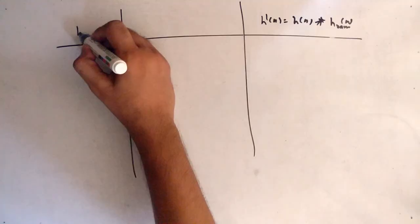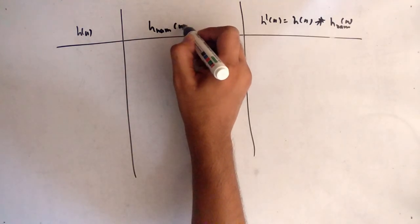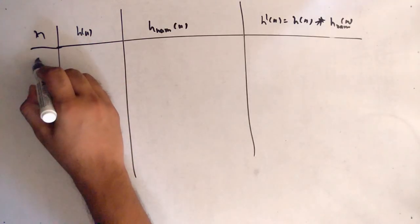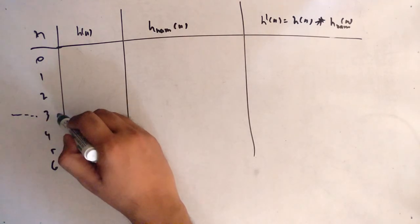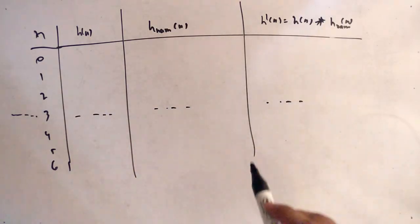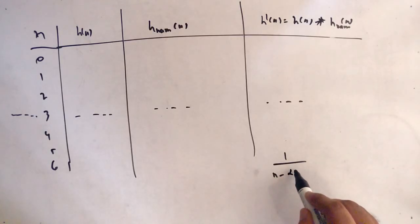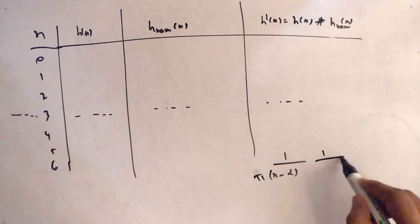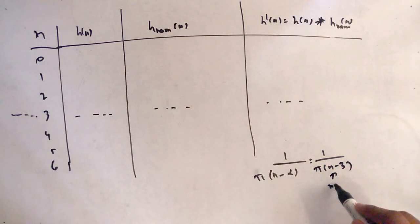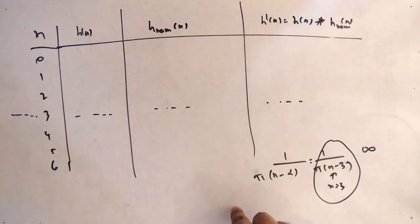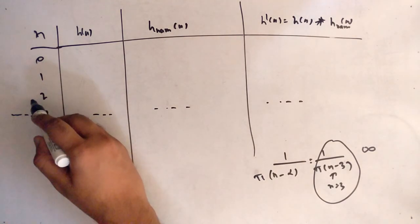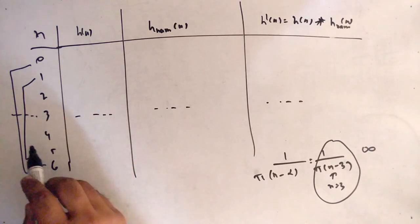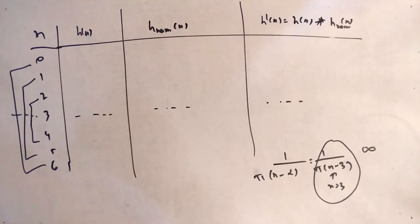Trick two: because h(n) = 1/(π(n−3))·(−sin(3π/4·(n−3))), when n = 3 the denominator becomes zero and the value is indeterminate — so we skip n=3 for now. Also by symmetry: the value at n=0 equals that at n=6, n=1 equals n=5, and n=2 equals n=4. So we only need to compute for n = 0, 1, 2.